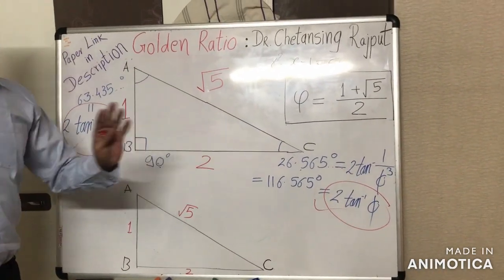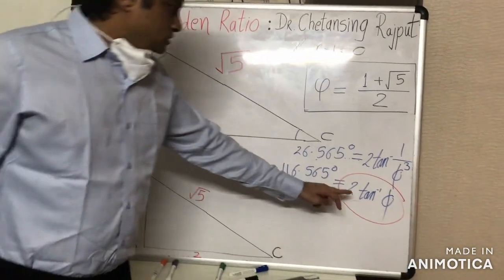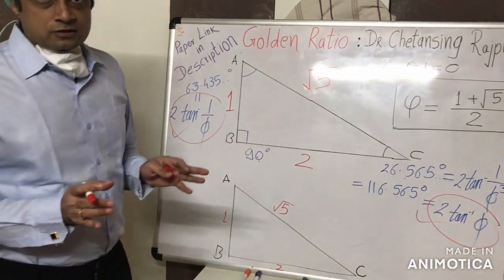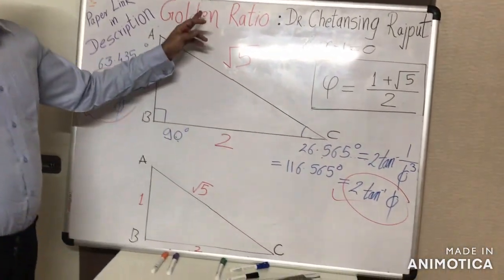And not just golden rhombus, these two angles are closely associated with all those geometrical figures which are concerned with golden ratio.